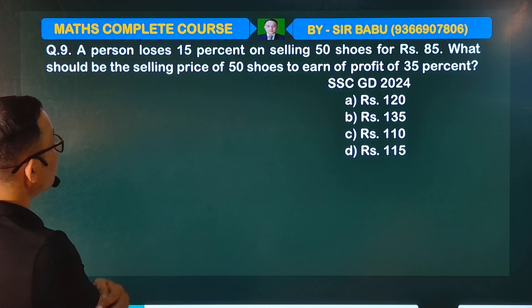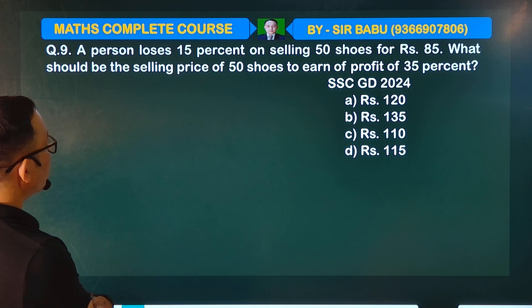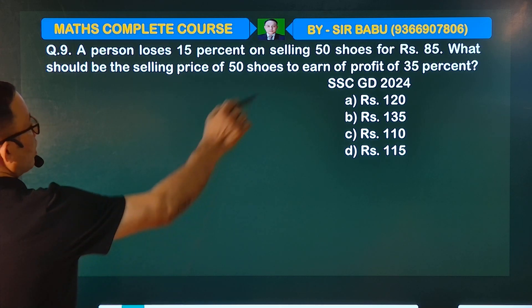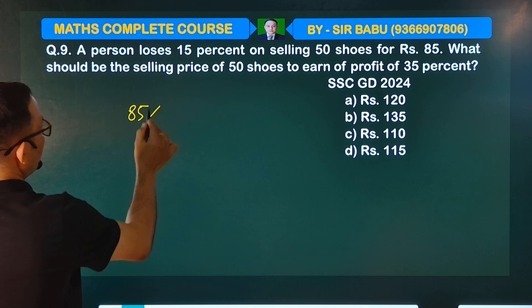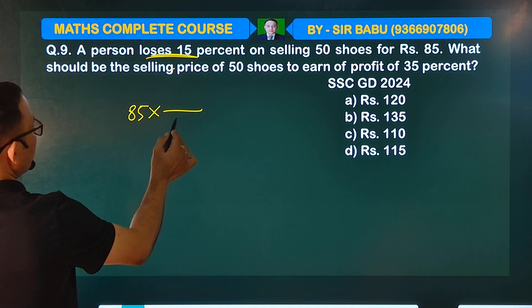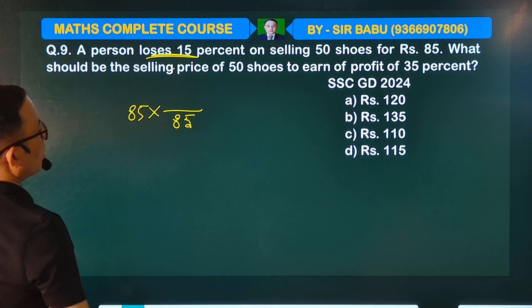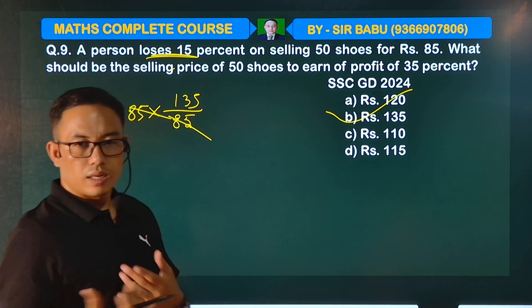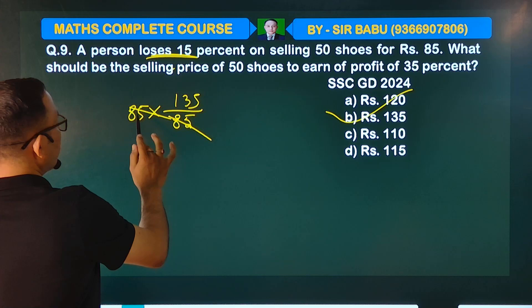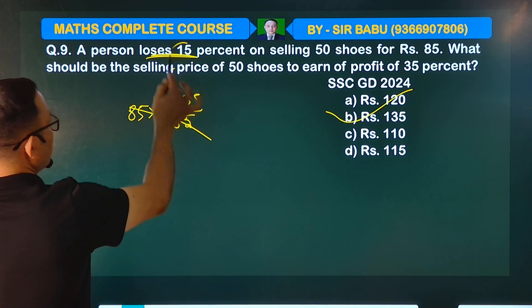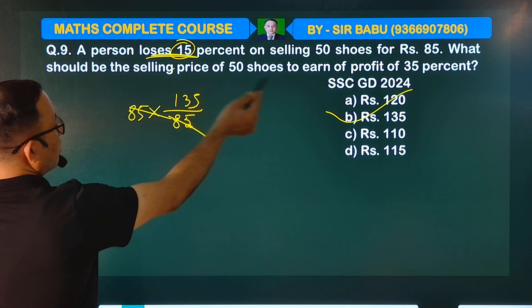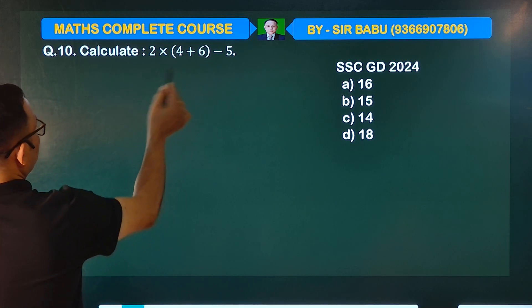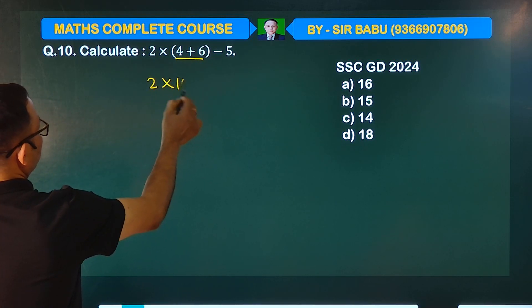A person loses 15% on selling 50 shoes. What should be the selling price of 50 shoes to earn a profit of 35%? She was at a 15% loss. Using a shortcut, if you put the proportion, there should be 3 times and that's fine.